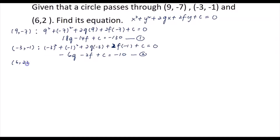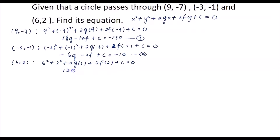For Equation 3, substitute the third point (6, 2) into the general equation: 6² + 2² + 2g(6) + 2f(2) + c = 0. After simplifying, you get 12g + 4f + c = -40. We name this Equation 3.